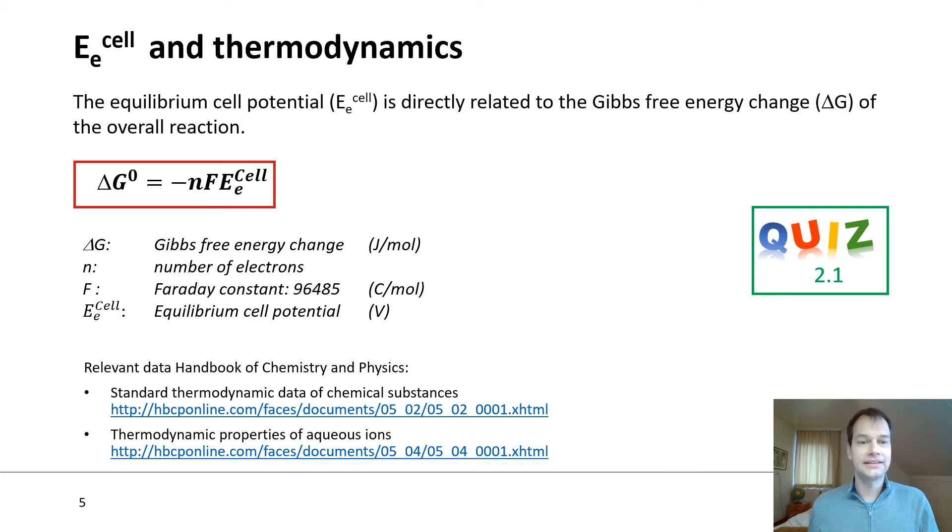This Gibbs free energy is directly related to the equilibrium cell potential via the equation depicted here. So you know the change in Gibbs free energy, and then you can divide it by the number of electrons that take place in a reaction, divide it by the Faraday constant, and then you get the equilibrium cell potential. If you want to practice a bit with this, I recommend you to carry out quiz question 2.1.